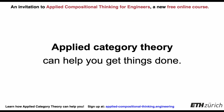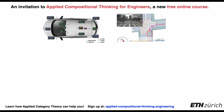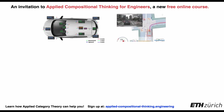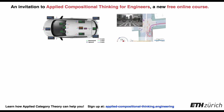So why is Applied Category Theory useful in engineering? Let's take the example of an autonomous vehicle. This is such a complex system with many different components of hardware and software. To design such a system we need to think compositionally, and that is where Applied Category Theory can help.